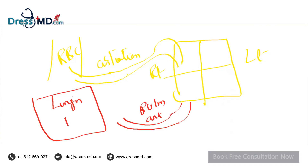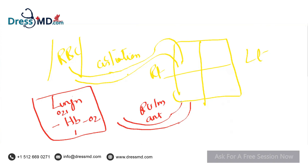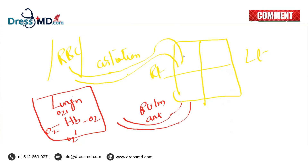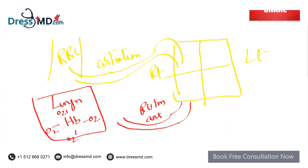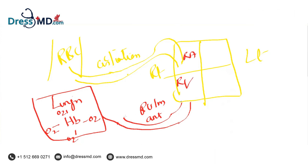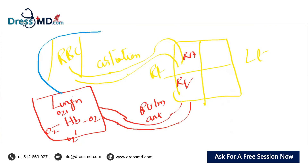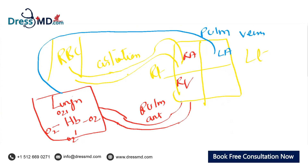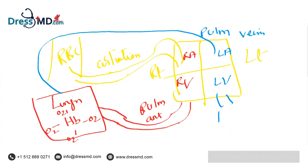Inside the lungs, one hemoglobin molecule has four oxygen binding sites. From the bone marrow, RBCs travel through the circulation to the right atrium, then to the right ventricle, then through the pulmonary artery to the lungs. From the lungs they carry oxygenated blood to the left atrium through the pulmonary veins, and then from the left atrium to the left ventricle, and then to the aorta.